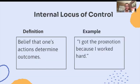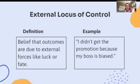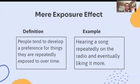Internal locus of control is the belief that one's actions determine outcomes. Example: I got the promotion because I worked hard. External locus of control is the belief that outcomes are due to external forces like luck or fate. Example: I didn't get the promotion because my boss is biased — so it's outside, it's external.